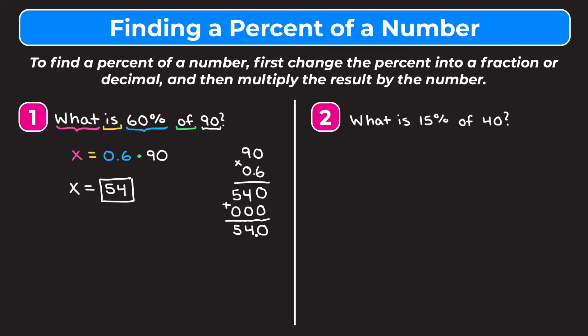Now let's look at example 2: what is 15% of 40? We're going to do the same thing and translate this into an equation. You don't technically have to write the equation — you could just multiply the percent in decimal form by the number — but writing the equation will be useful for solving other types of percent problems. 'What' is our variable X, 'is' means equals, and we change 15% to a decimal by moving the decimal point two places to the left, giving us 0.15. 'Of' means multiplication and 40 stays as is.